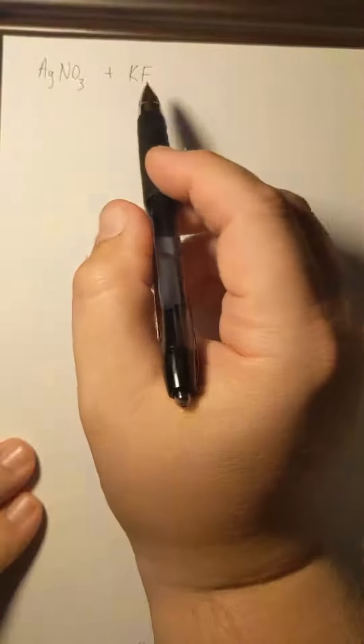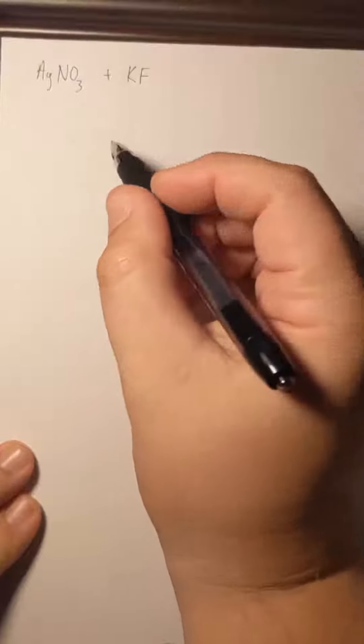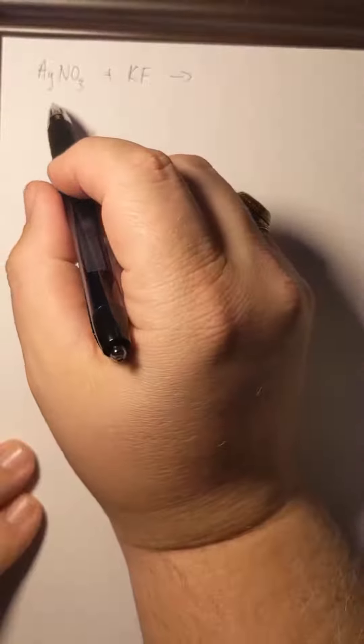For our complete ionic equation, everything that's aqueous we want to write as individual ions. First we need to figure out what our products are before we can rewrite this.